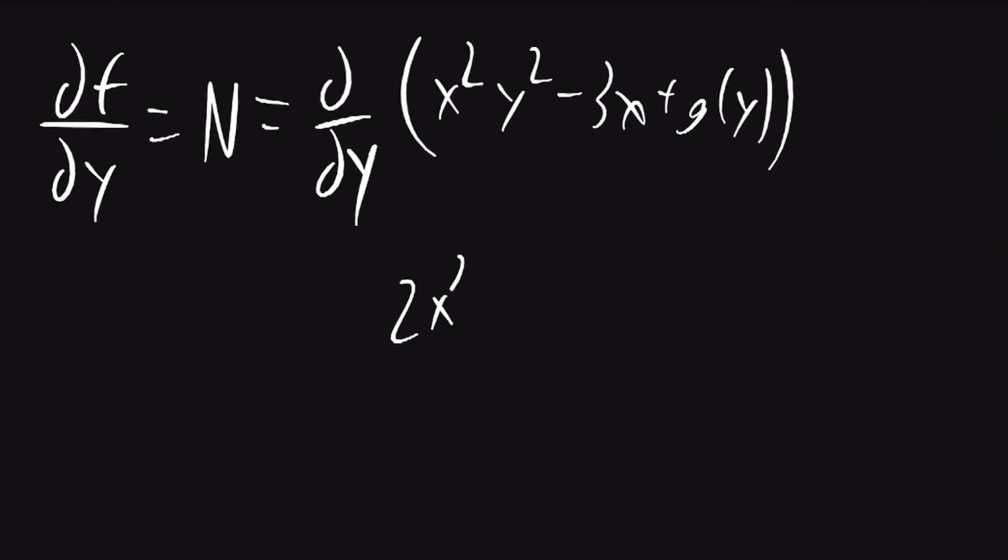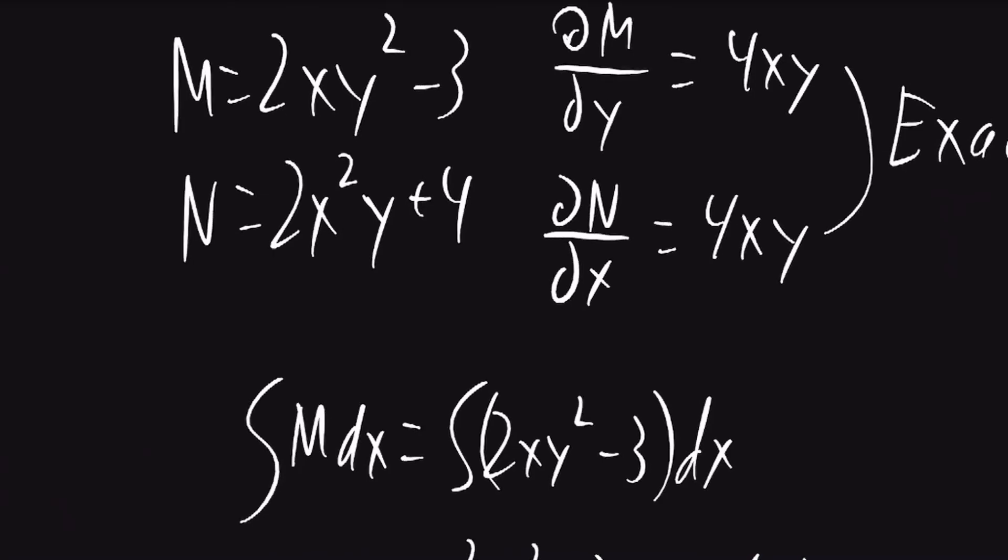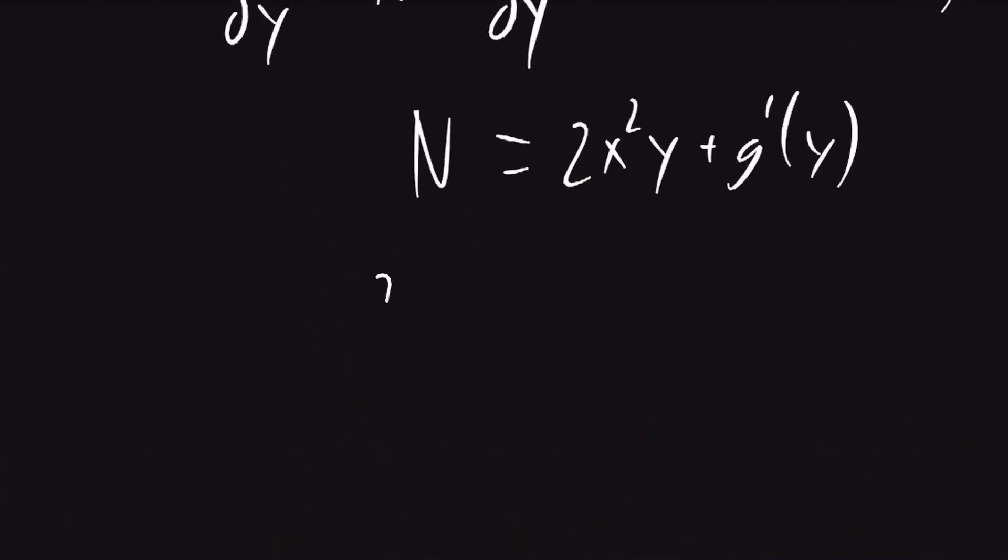This is going to be 2x squared y plus g prime of y. This is going to be equal to n. We said that n is equal to 2x squared y plus 4. I'll write that here.